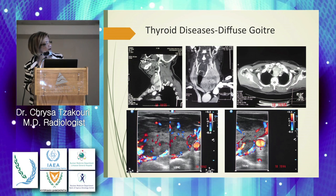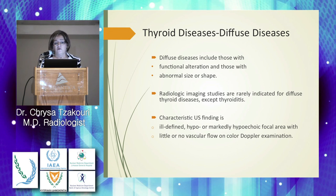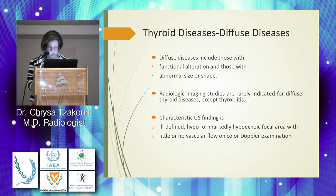In cases of diffuse goiter, even in longitudinal, oblique, and transverse planes, it may not be possible to demonstrate the whole gland in a single image. CT scan provides very good demonstration in these cases. Diffuse thyroid diseases include those of functional alteration and those with abnormal size and shape. Radiologic imaging is rarely indicated for diffuse thyroid disease, except for thyroiditis. Characteristic findings of thyroiditis include ill-defined hypo- or macro-hypoechoic focal areas, with little or no vascular flow on color Doppler imaging.